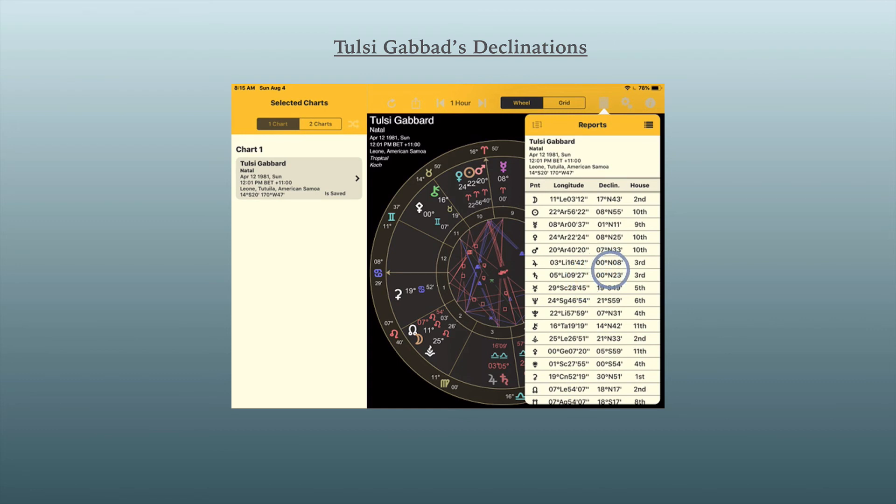For example, here we've got Mercury at one degree north latitude in the declinations, and that is what's called parallel, and it's parallel her Jupiter-Saturn conjunction. And you wouldn't know that the three are actually working closely together. You wouldn't know that by just looking at her chart. And so she does have a certain gravitas and success in speaking.